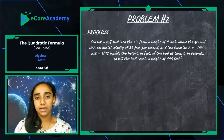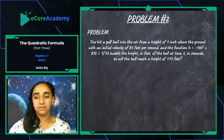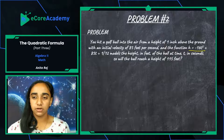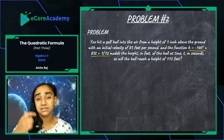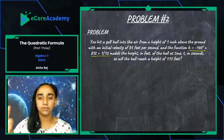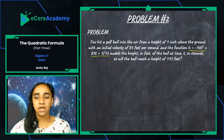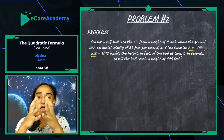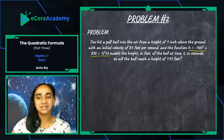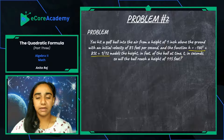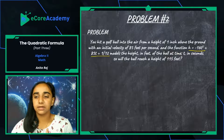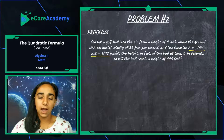A lot of that information is really meant to overwhelm you, especially on an assessment or standardized test. You just need to narrow in on the information you need. This is the quadratic equation that represents the scenario — it represents the height of the ball in feet at a given time. After one second, if we plug 1 in for t we find out how high the ball is at that moment. The question is: will the ball reach a height of 115 feet?